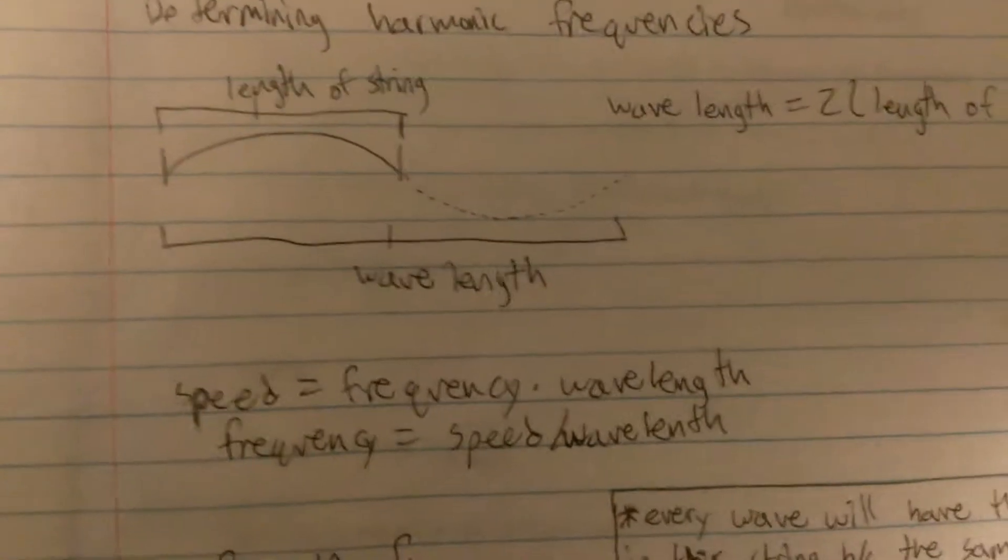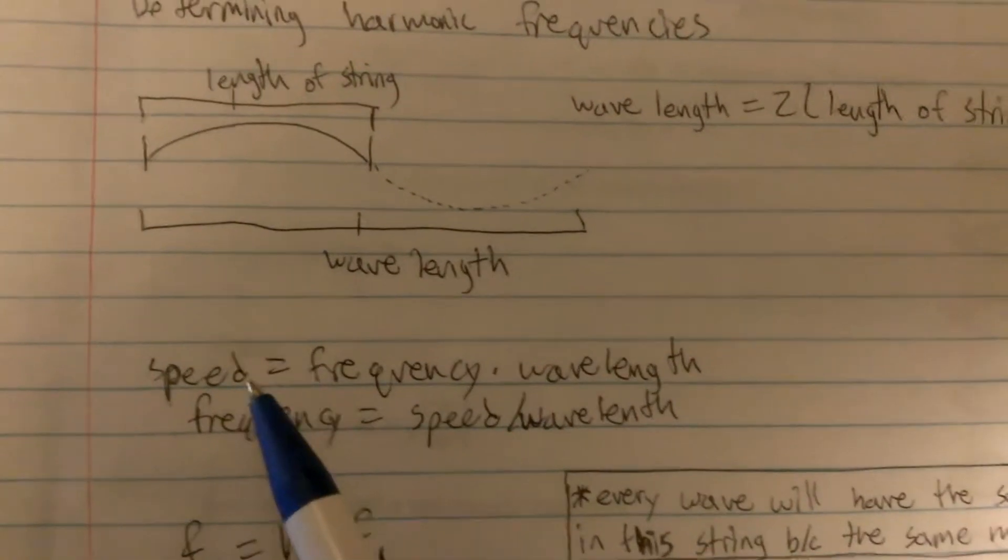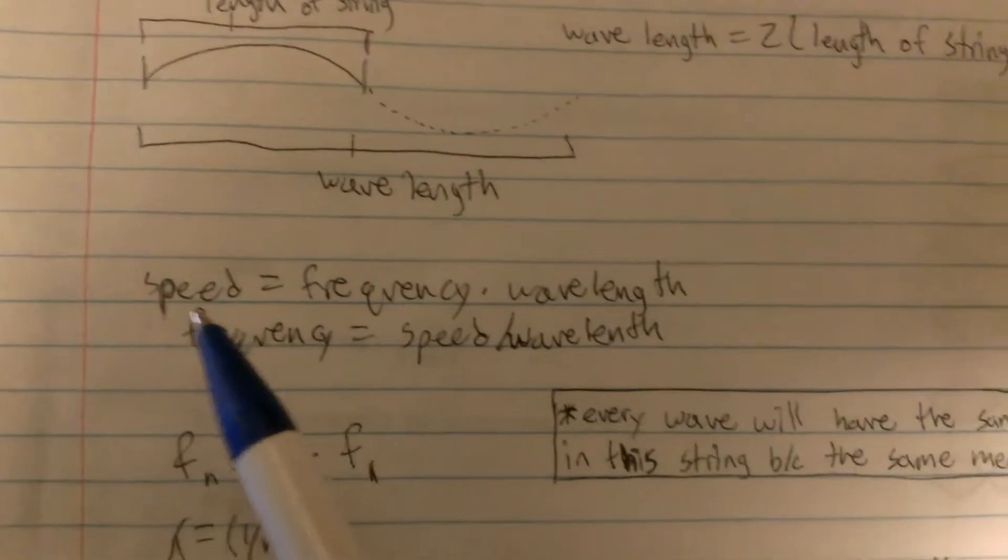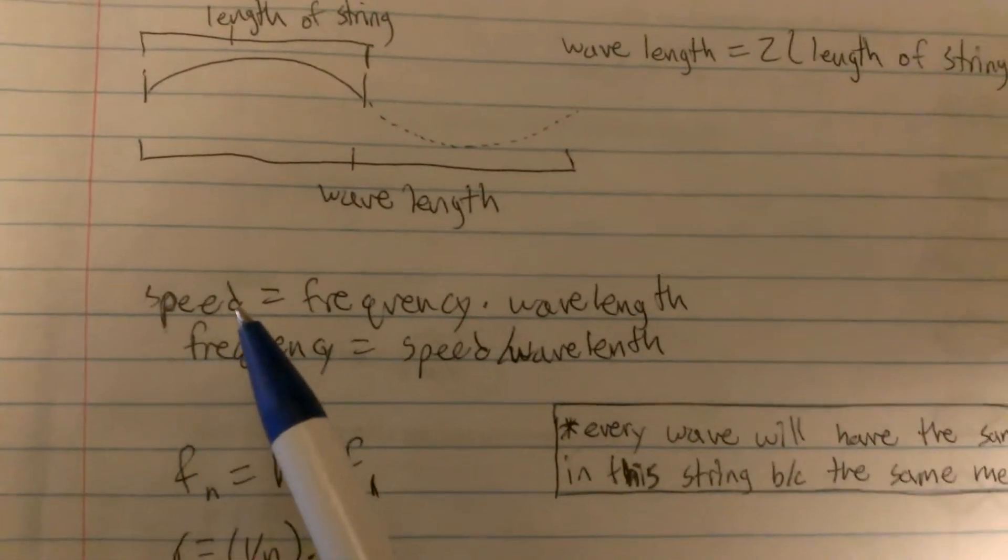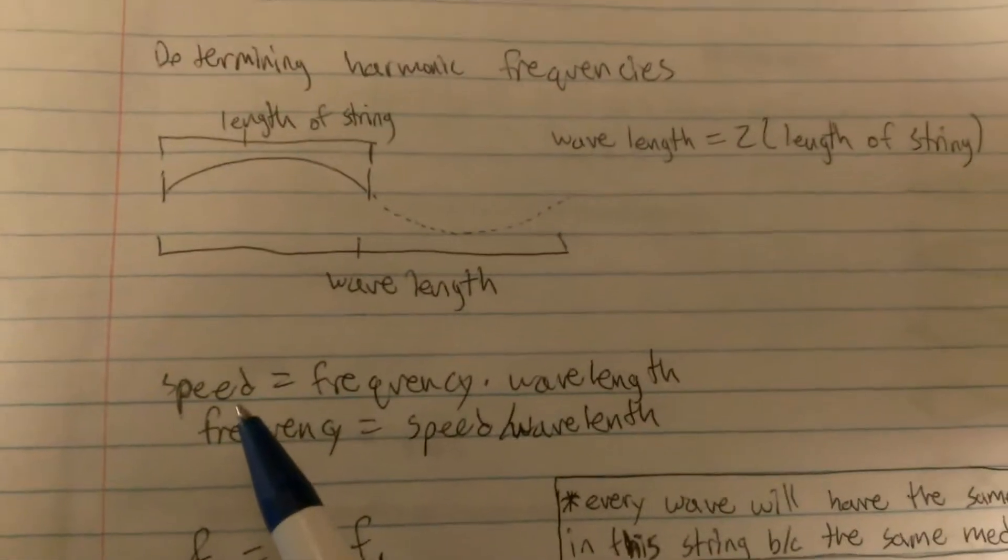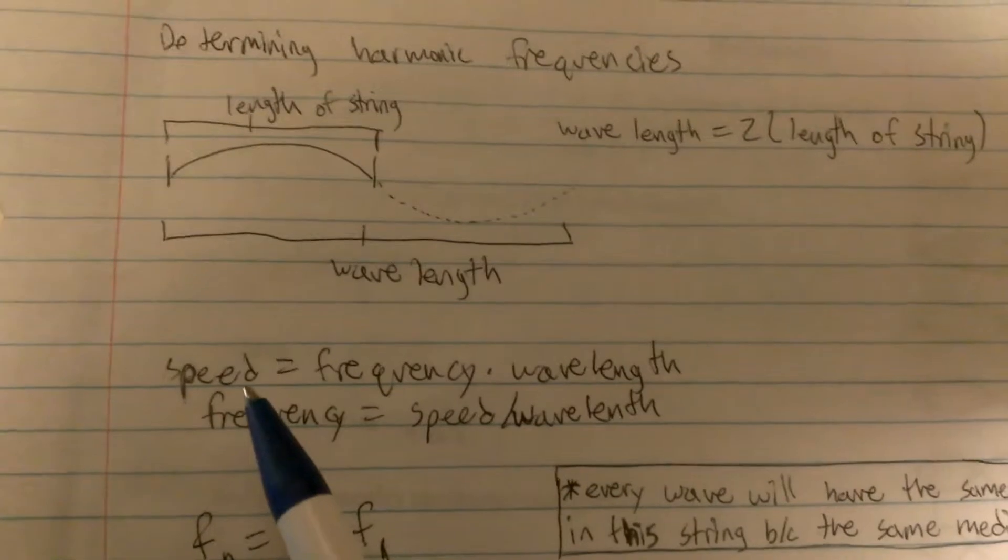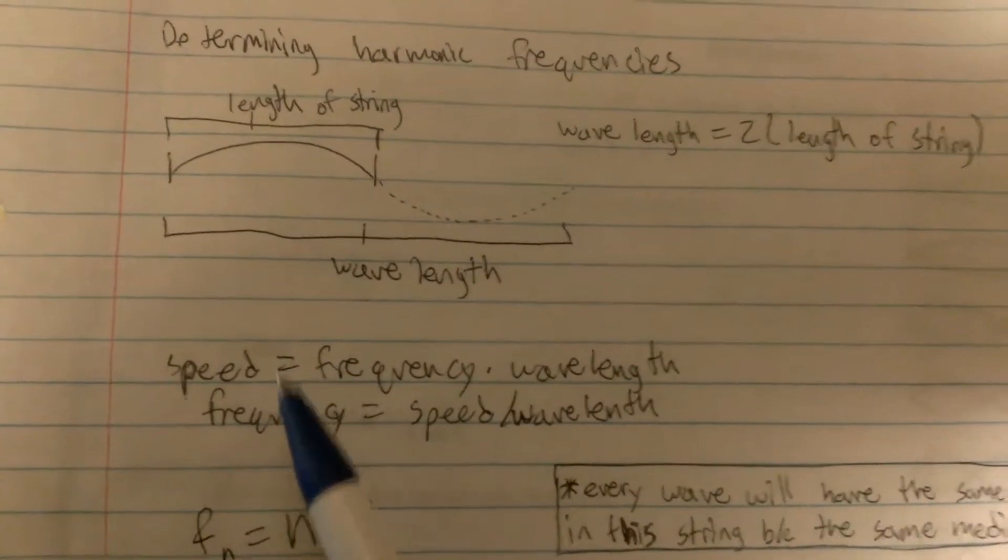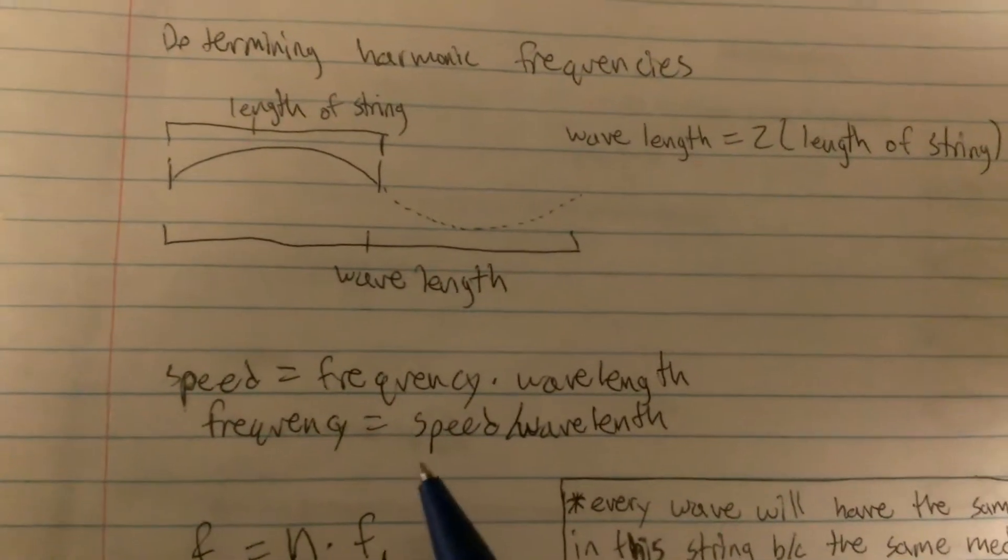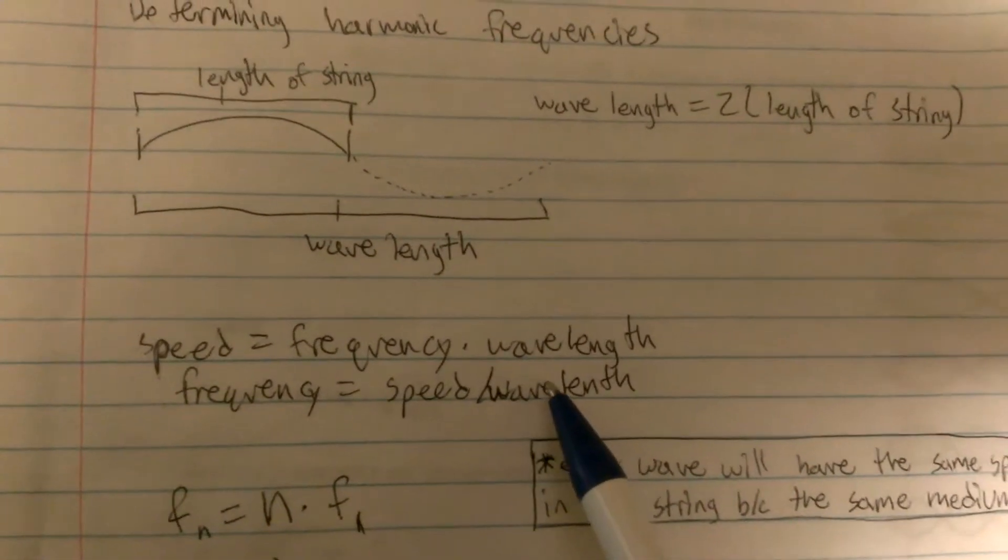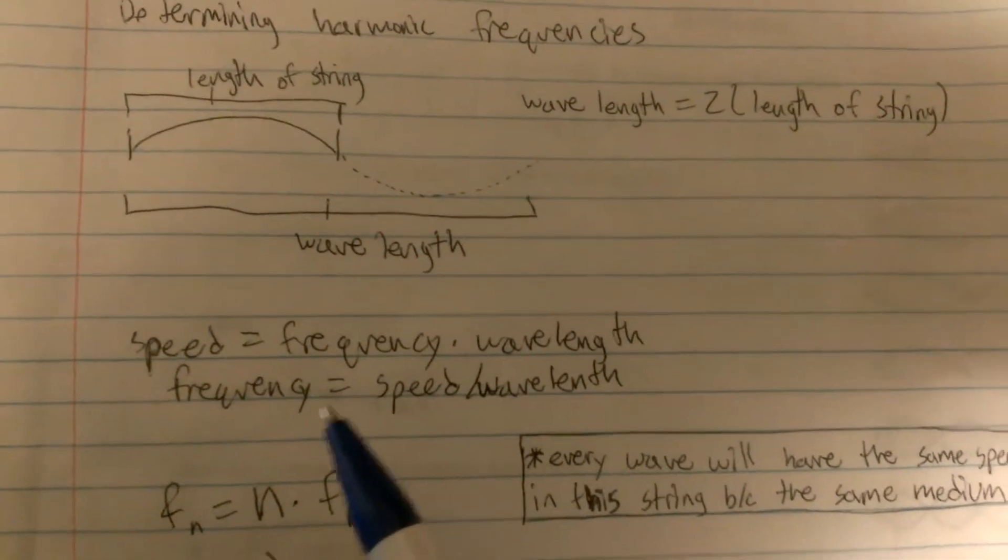As most of you should know by now, speed is equal to the frequency times the wavelength. You find this because your speed for your harmonic frequency will always stay the same because it is the same medium or the same string.